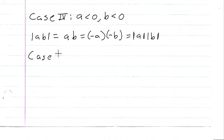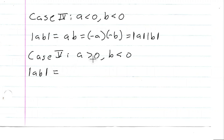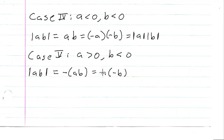Case five: a is greater than zero and b is less than zero. Since a is positive and b is negative, a times b is less than zero, so the absolute value of ab is negative ab. We can rewrite this as a times negative b. Since a is greater than zero, a equals the absolute value of a. Since b is less than zero, negative b equals the absolute value of b. So we still get the absolute value of ab equals the absolute value of a times the absolute value of b.